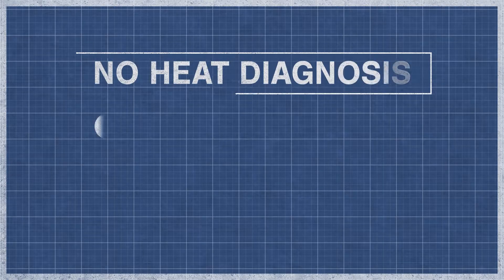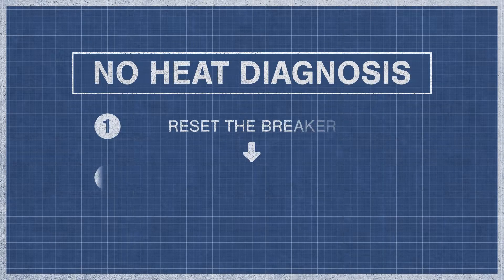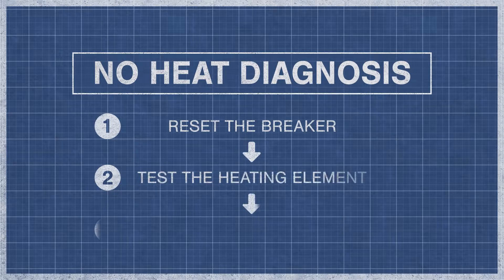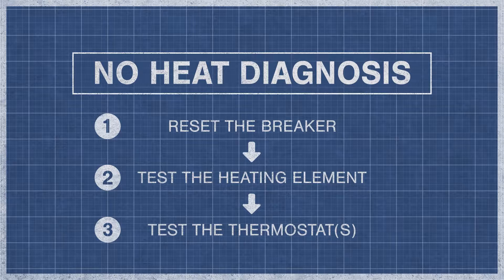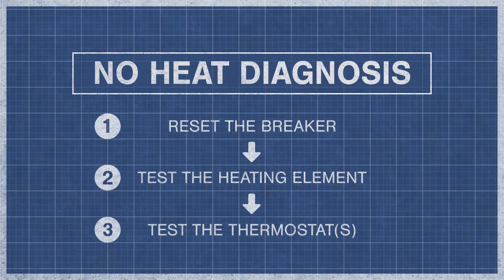When a dryer fails to produce heat, it is best to eliminate the potential problems step-by-step. For an in-depth guide, watch the videos below. If you've reset your breaker and your dryer still doesn't have heat, then move on to the continuity test.